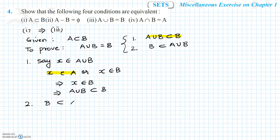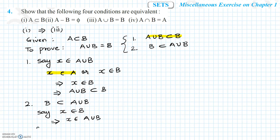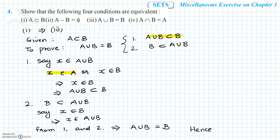The second case — B is a subset of A union B — is obvious: if x belongs to B, then I can easily conclude that x will belong to A union B. From cases 1 and 2 we conclude that A union B is equal to B. So this is proved.